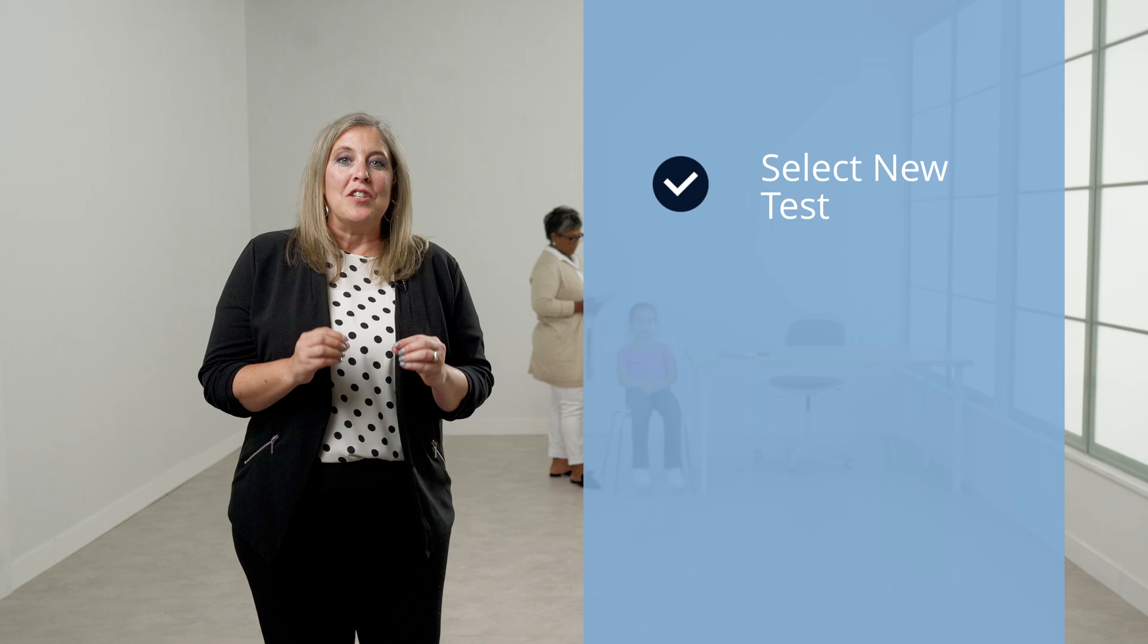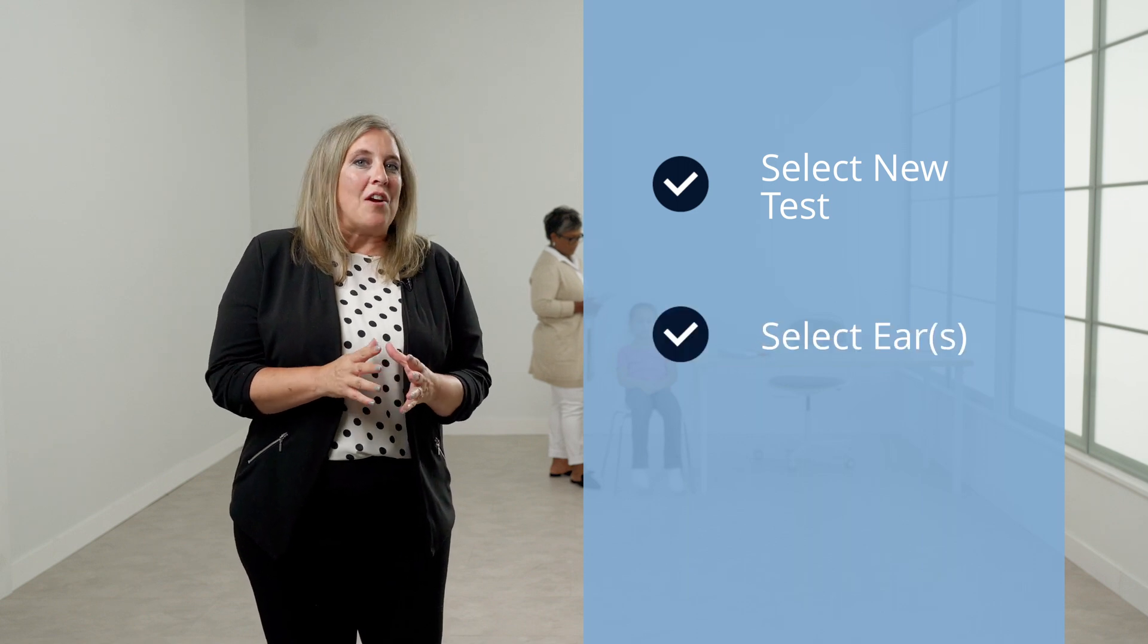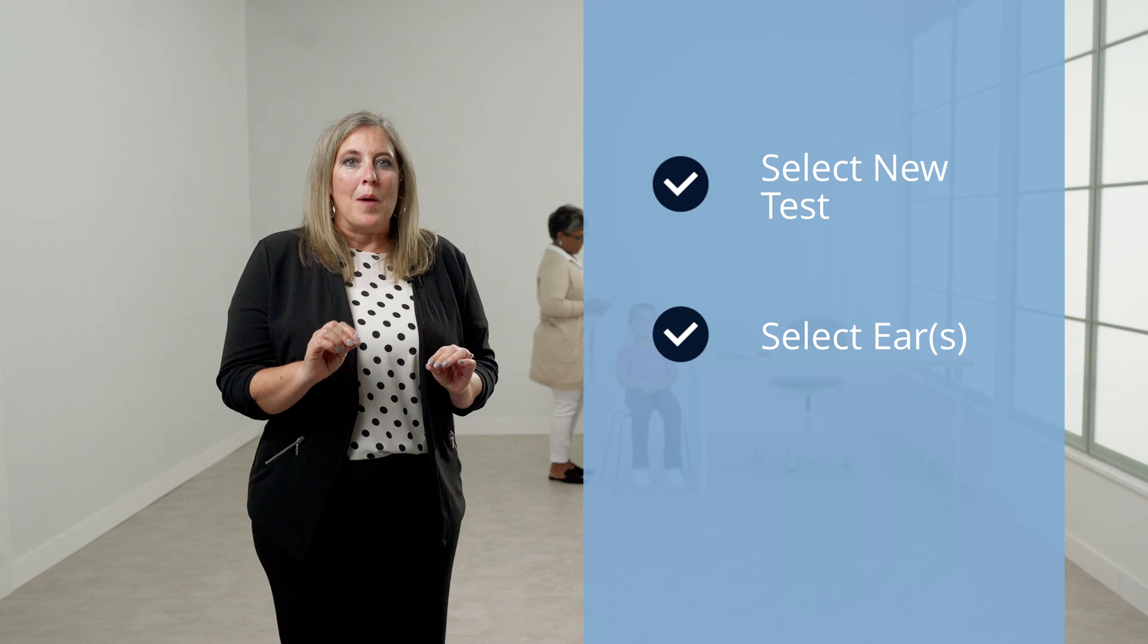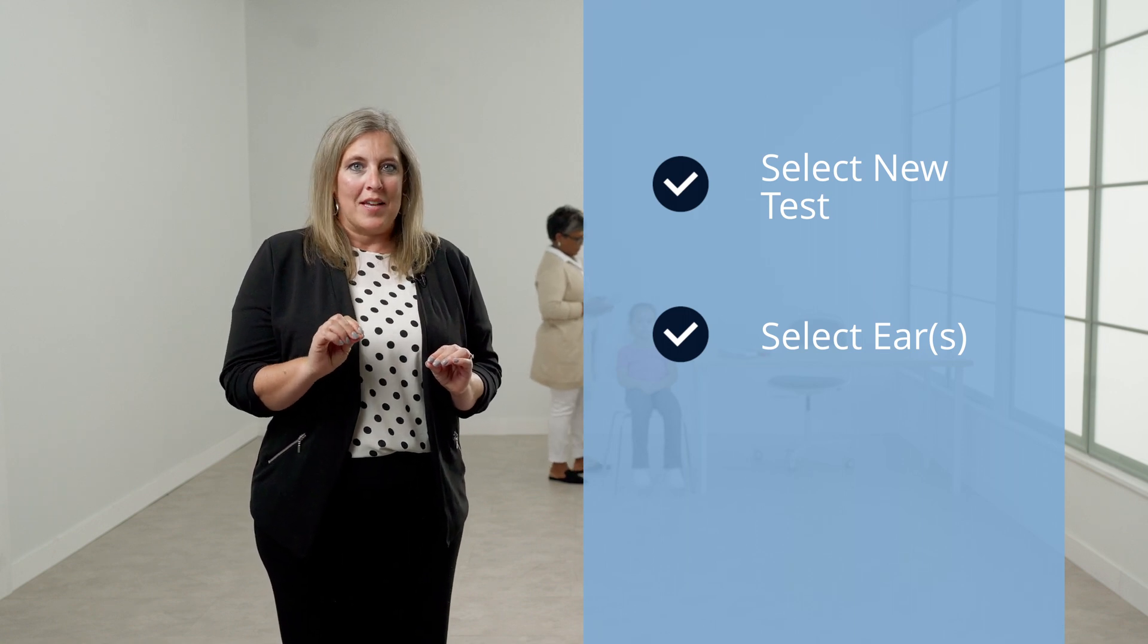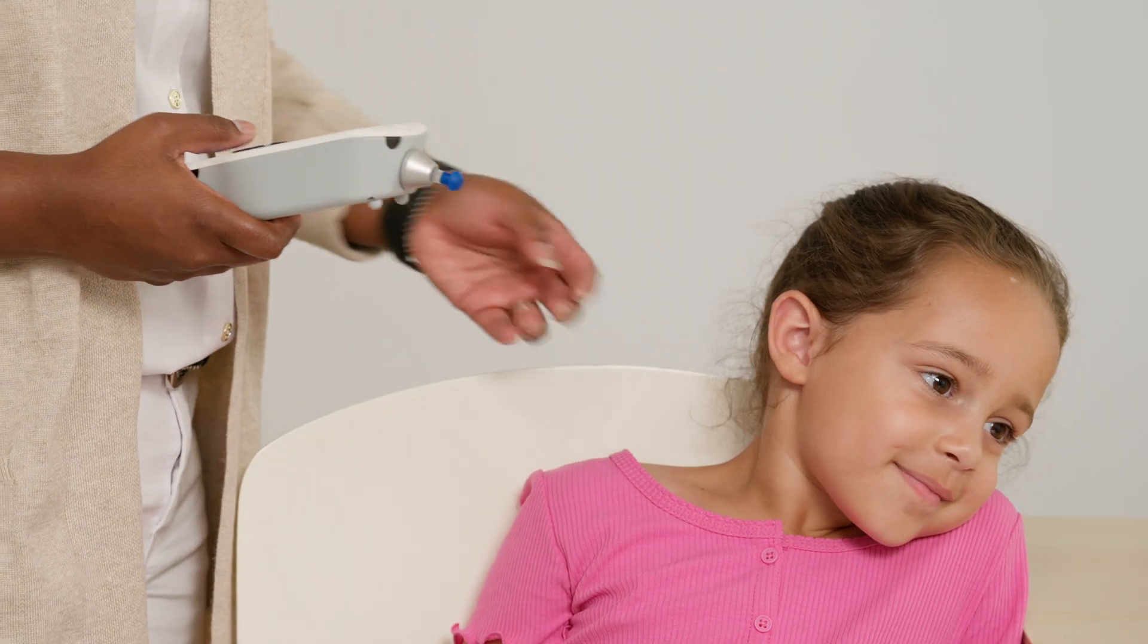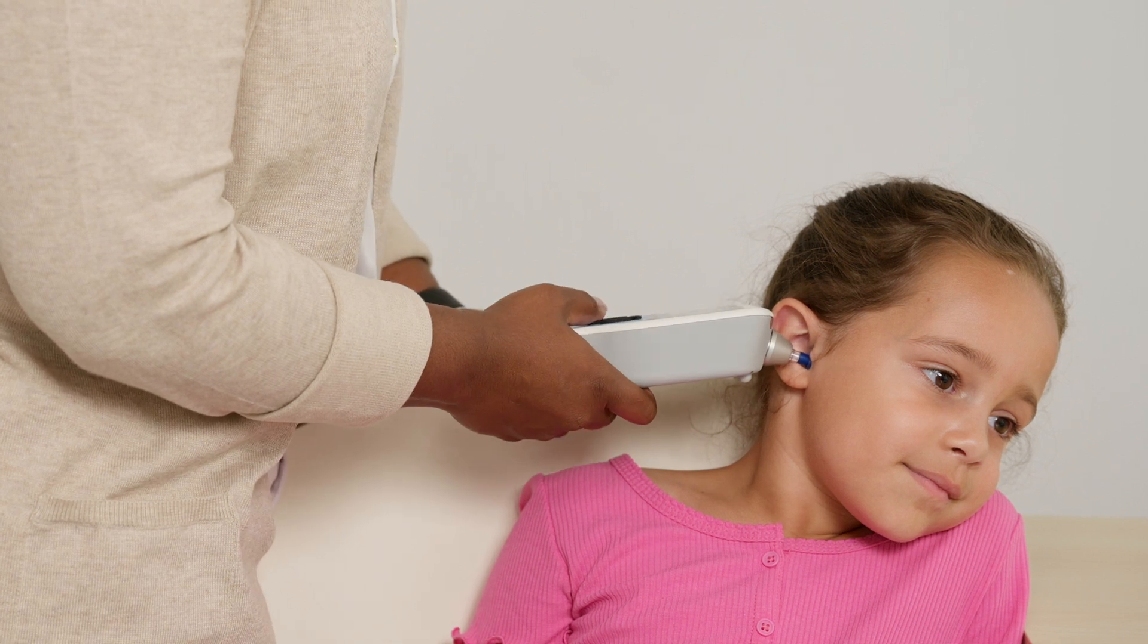From the main menu, select new test. Select the ear or ears to be tested. The Allegro provides visual prompts during each step in the test process. The first message is insert probe. At that time, you will insert the probe into the opening of the ear canal to obtain an air tight seal and hold the Allegro at that position for the entire test. Keep your eye on the display screen as additional messages will inform you of the status of the evaluation.